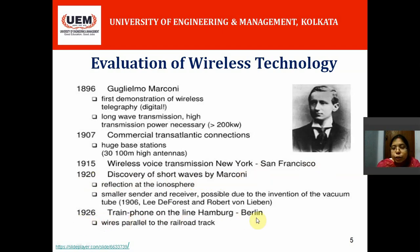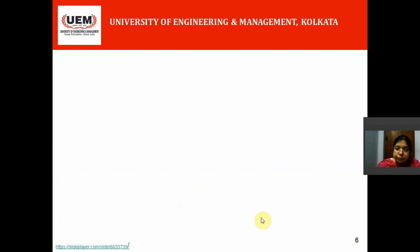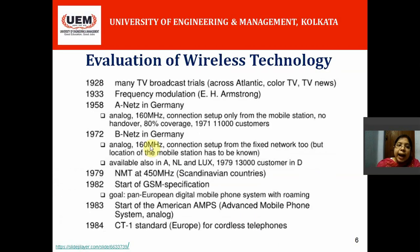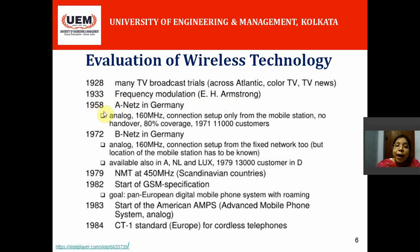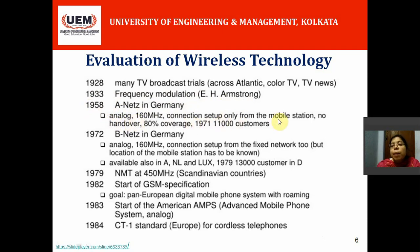In 1926, a train phone service ran on the line Hamburg to Berlin. In 1928, many television broadcast trials were introduced. In 1933, frequency modulation was first introduced by Armstrong. In 1958, a remarkable year in wireless communication history: ANETS in Germany was started. ANETS is the first mobile network — purely analog in nature, and connection could only be set up from the mobile station. No handover was possible.